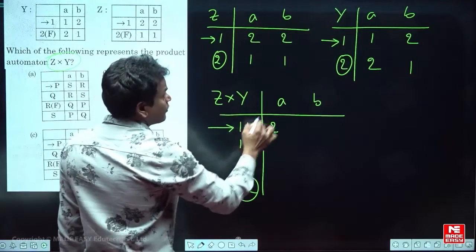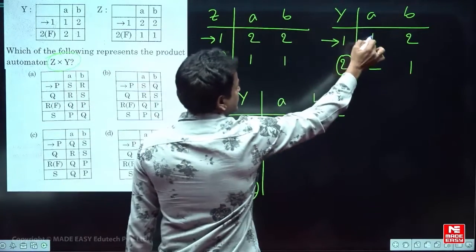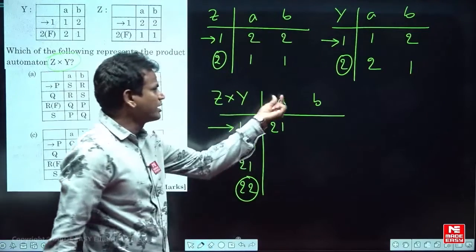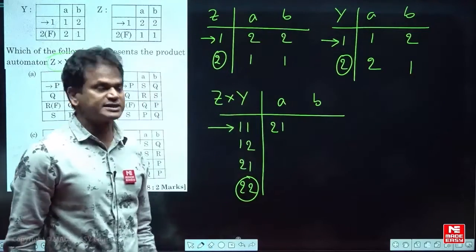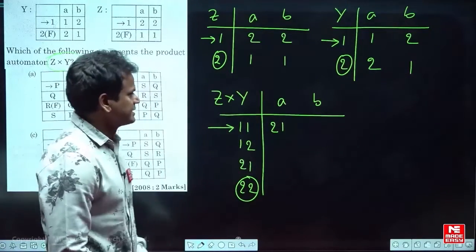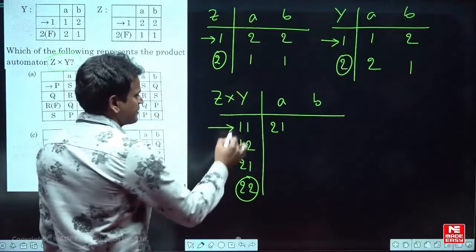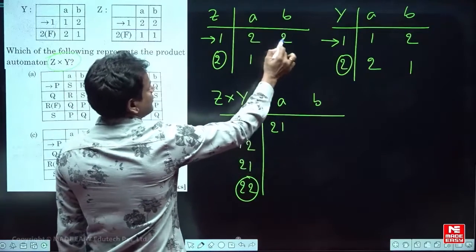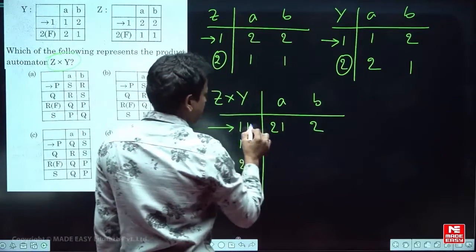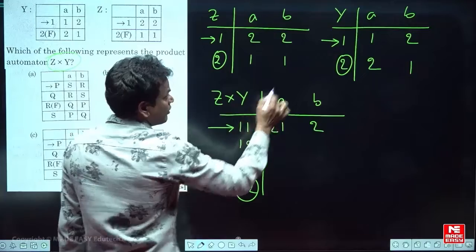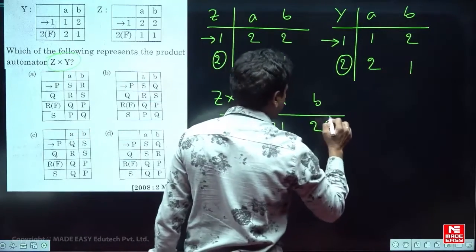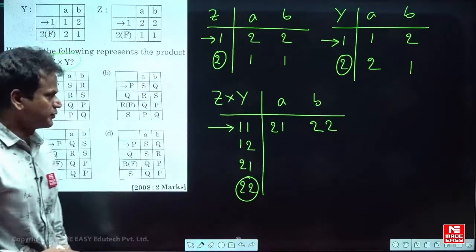In Y, state 1 on A goes to 1. So the new state for 1,1 on A will be 2,1. Similarly, 1,1 on B: in Z state 1 on B goes to 2, and in Y state 1 on B goes to 2. So the result is 2,2.